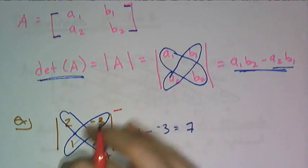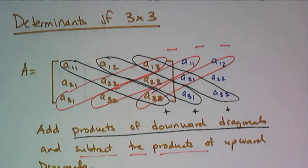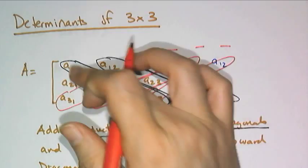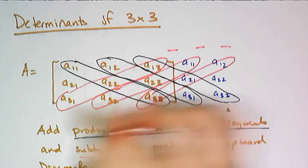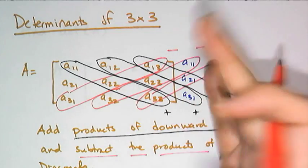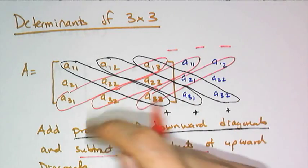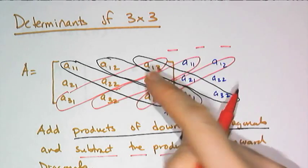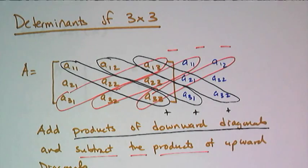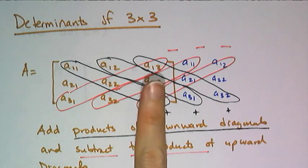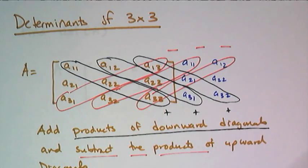Now with the 2 by 2, there's only 1 of each. But with a 3 by 3, I have 3 downwards and 3 upwards. And this is how I find the determinant by hand. Now of course, your calculator will very quickly find the determinant for you. But let's do one example by hand before we revert to calculator work.